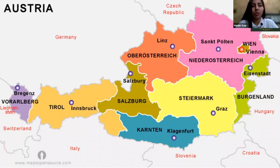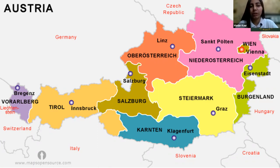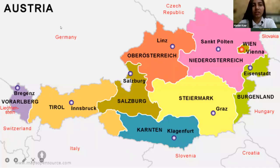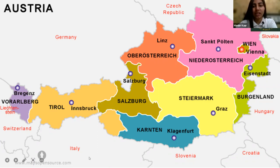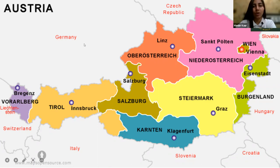Here you can see the map of Austria. Can you tell me some of the neighboring countries of Austria? So here, Germany is a neighboring country of Austria. Can you see Switzerland? Germany, Switzerland, Italy, and Slovenia and Croatia — these are a few neighboring countries of Austria.